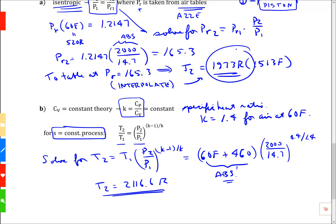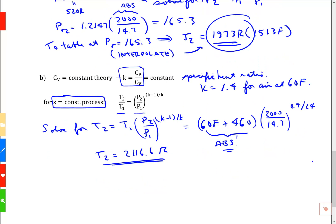That's quite a bit different than the earlier value. This is an approximate theory. What's the percent error? It's 2116.6 minus 1973 divided by 1973 times 100%, and I get a 7.3% error. That's pretty big.